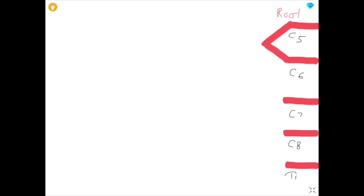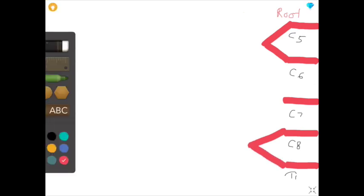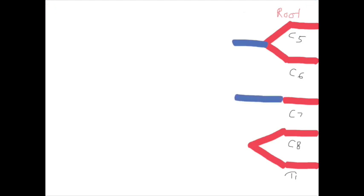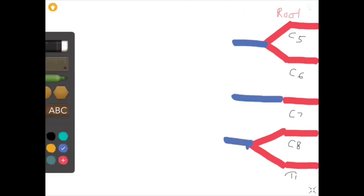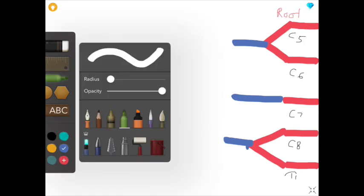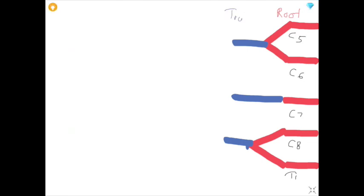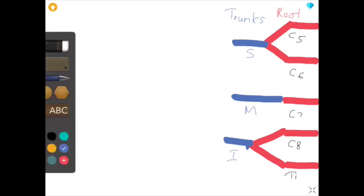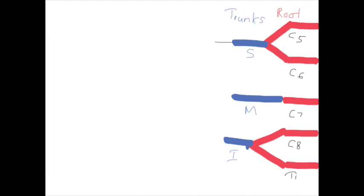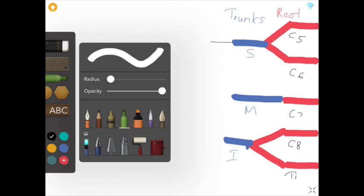The upper two roots and lower two roots combine and form the trunks. C7 root alone is involved in the formation of a trunk. The blue colored lines are trunks. There are three trunks: superior, middle, and inferior. The superior trunk is formed by the union of C5 and C6 roots, the middle trunk is formed by C7 alone, and the inferior trunk is formed by the union of C8 and T1 roots.